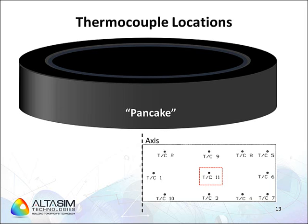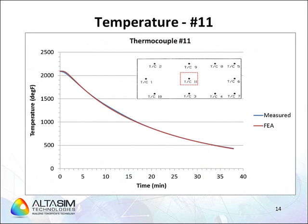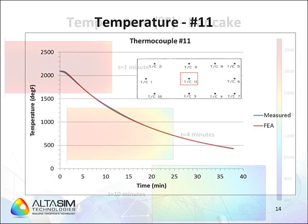Looking at how the temperature at this point changes with time, we see in this plot the temperature in degrees Fahrenheit as a function of time from the start of air quenching to approximately 40 minutes. The blue line shows the measured data from the thermocouple and the red line shows the finite element analysis results. This location was chosen because it includes the effects of heat transfer at the pancake surface and the conduction through the solid pancake. In this slide, we are looking at the temperature at a single point. In experiments, you can only get data at a few points where probes have been placed. COMSOL Multiphysics provides temperature data at thousands of nodes within the model, as shown in this next slide.